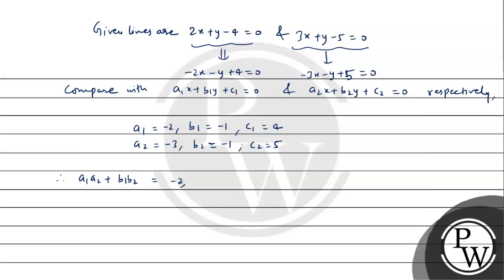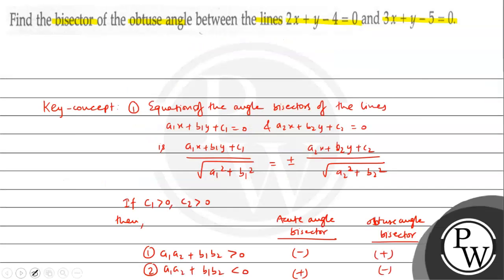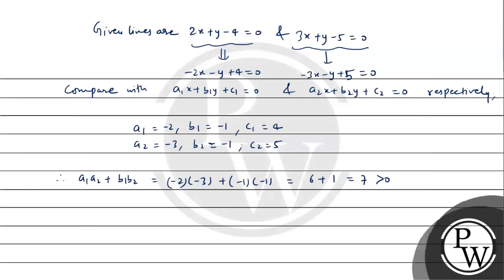So a1a2 + b1b2 = (-2)×(-3) + (-1)×(-1) = 6 + 1 = 7, which is greater than 0. And if a1a2 + b1b2 > 0, then the plus sign corresponds to the obtuse angle bisector. Therefore, the obtuse angle bisector uses the positive sign.